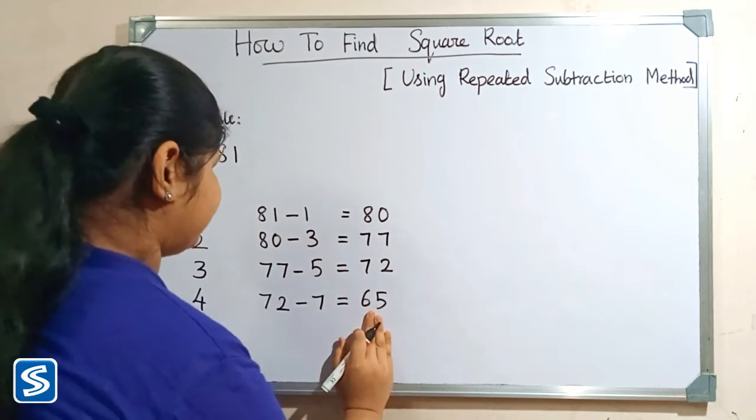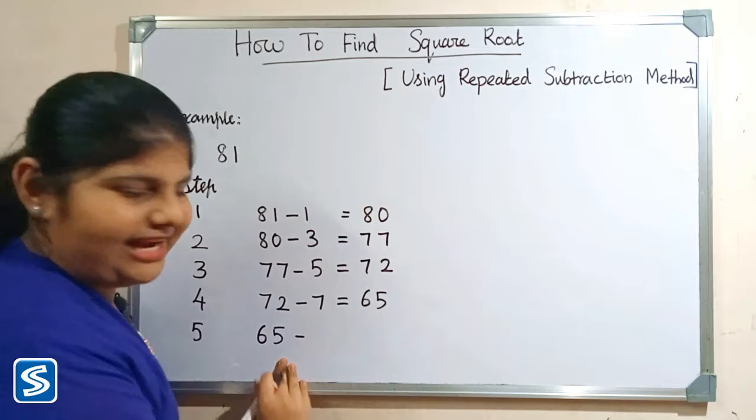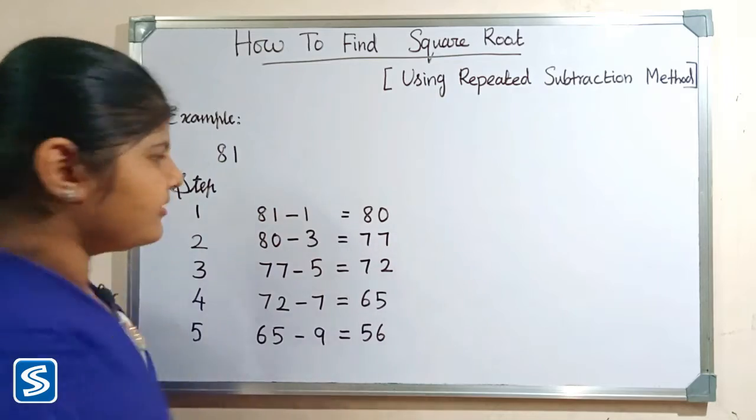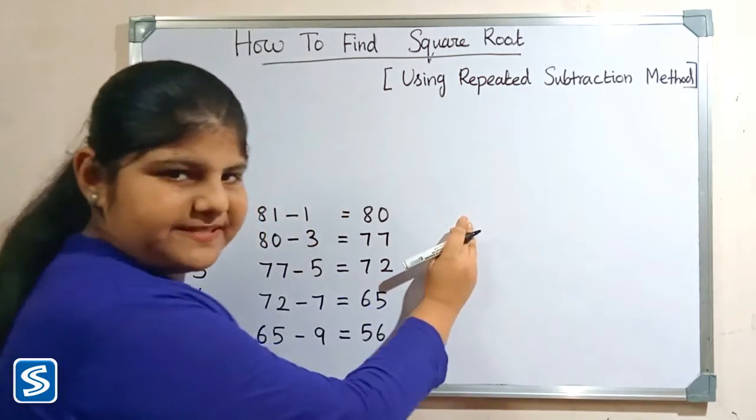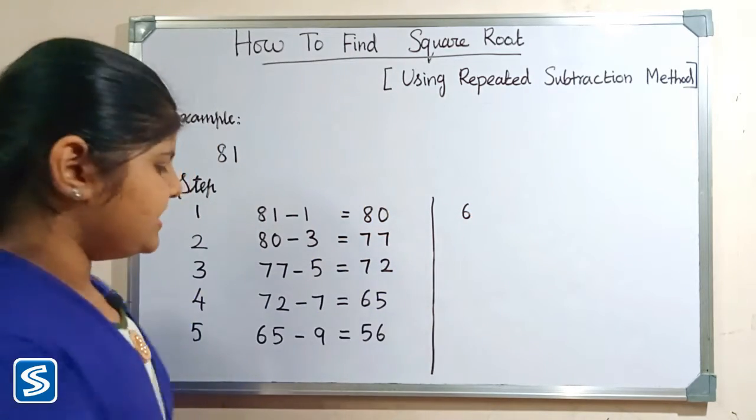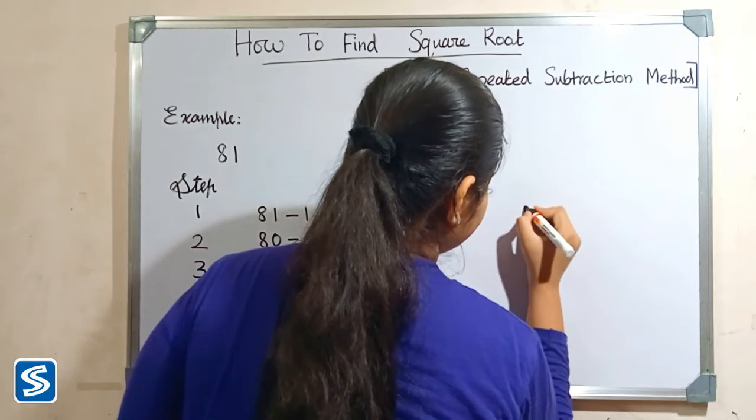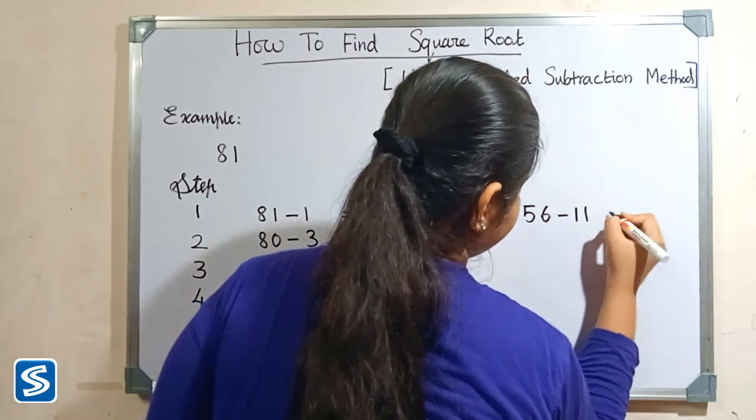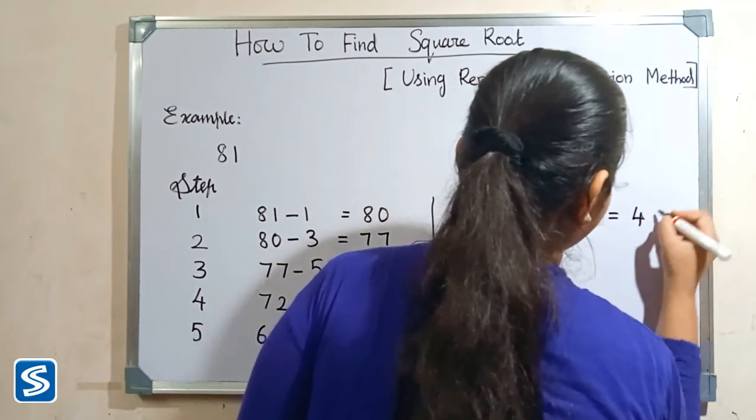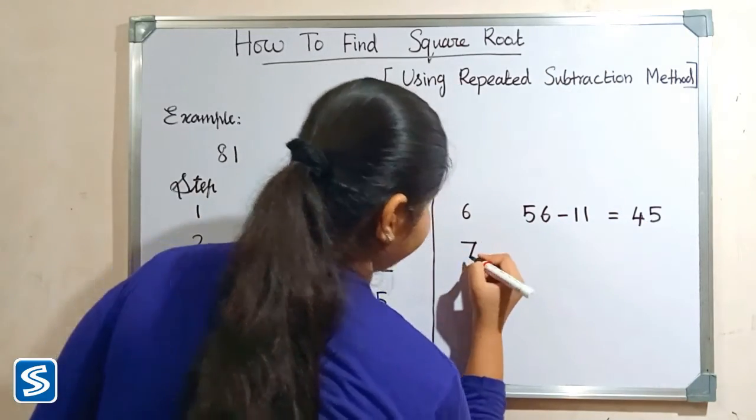Step 5: Subtract 9 from 65, so 65 minus 9 will be 56. Step 6: 56 minus 11 will be 45.